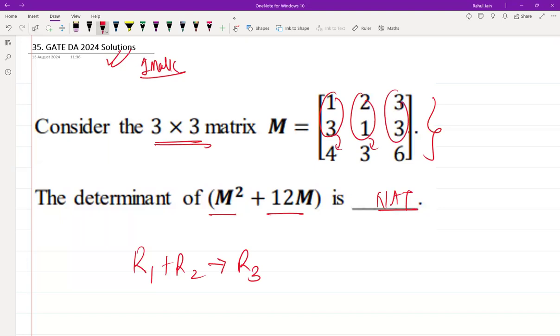We know that |A + B| is less than or equal to |A| + |B|. If this is so, then |M² + 12M| will be less than or equal to |M²| + |12M|.